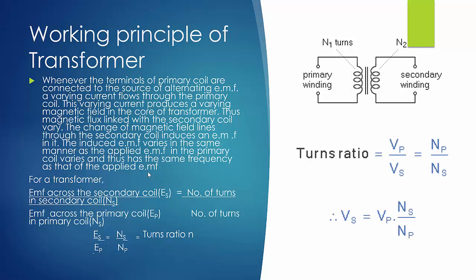Now let's understand how a transformer works. As we have already studied, whenever a current flows through a conducting wire, a magnetic flux or magnetic field is produced around it — this is how we produce an electromagnet. Here, there is a primary winding coil and a secondary winding coil. When a voltage is applied across the primary winding, current flows through it, producing a magnetic field around it.